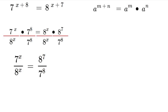So we'll have 7 to the power of x over 8 to the power of x is equal to 8 to the power of 7 over 7 to the power of 8. Now our left side here since we have 7^x and 8^x we can rewrite that as 7 over 8 to the power of x.